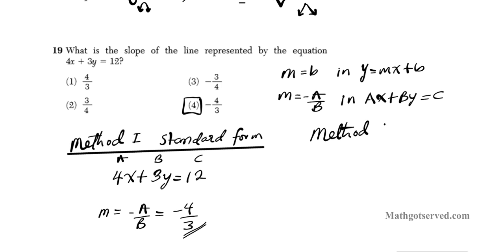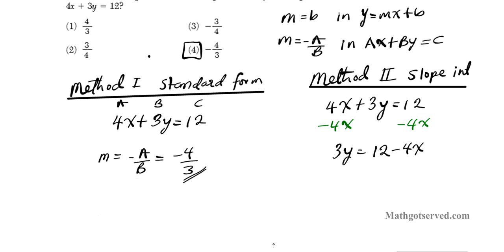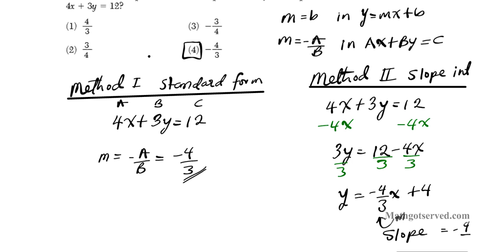Now let's try method two using the slope-intercept form. This is longer because we have to transform the equation from standard form into slope-intercept form. We have 4x plus 3y equals 12. Subtract 4x from both sides to get 3y equals 12 minus 4x. Then divide every term by 3, and we get y equals negative 4/3 x plus 4. We can clearly see our slope m, the coefficient of x, is negative 4 over 3, confirming our answer is option number 4.